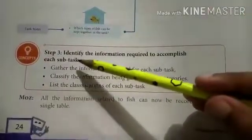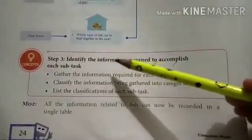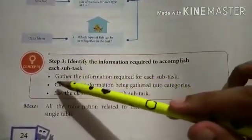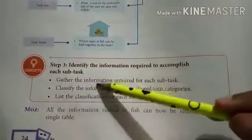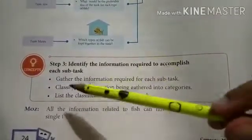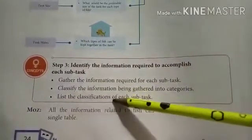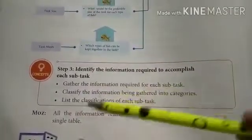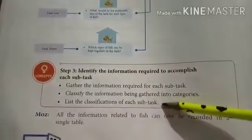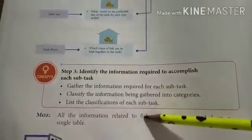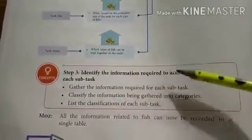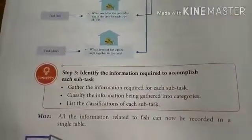Step 3 is: identify the information required to accomplish each subtask. First, gather the information required for each subtask. Number 2, classify the information being gathered into categories. Then list the classifications of each subtask.